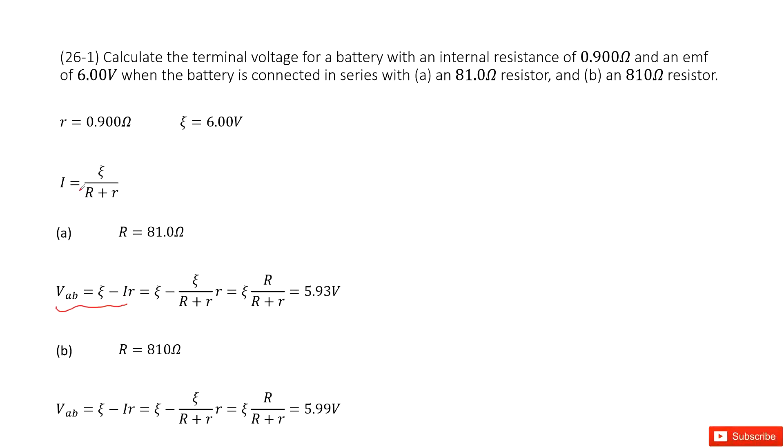The current can be calculated using the equation: emf divided by the external resistance plus internal resistance. Input this current term in the function, and you get the function for the terminal voltage VAB.